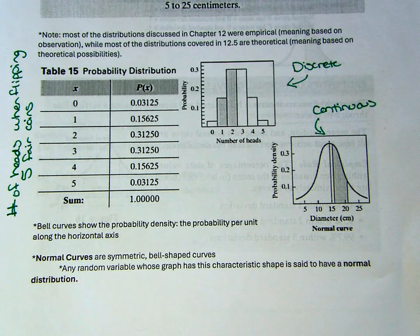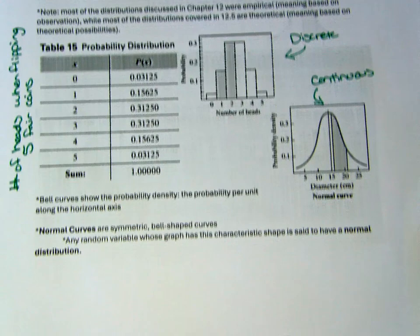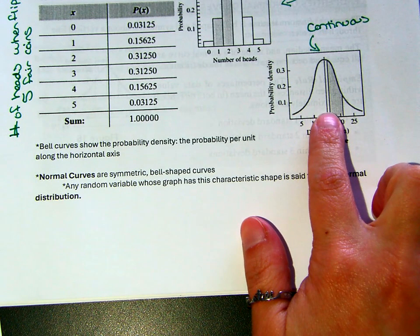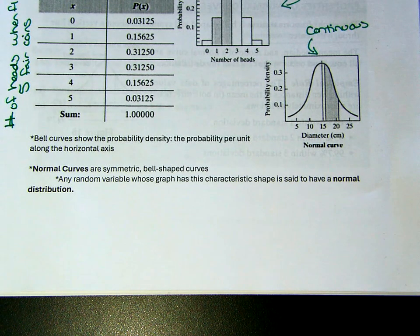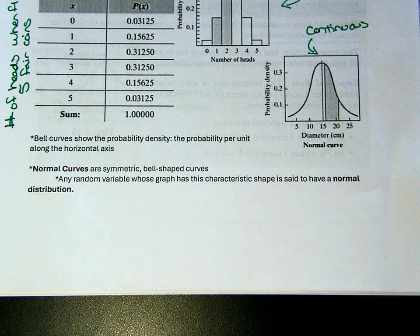Bell curves show the probability density — the probability per unit — along the horizontal axis. What we're really dealing with today are normal distributions or normal curves. Normal curves are symmetric bell-shaped curves. Any random variable whose graph has this characteristic shape is said to have a normal distribution, and we're going to look at everything we know about normal distributions based on that shape.